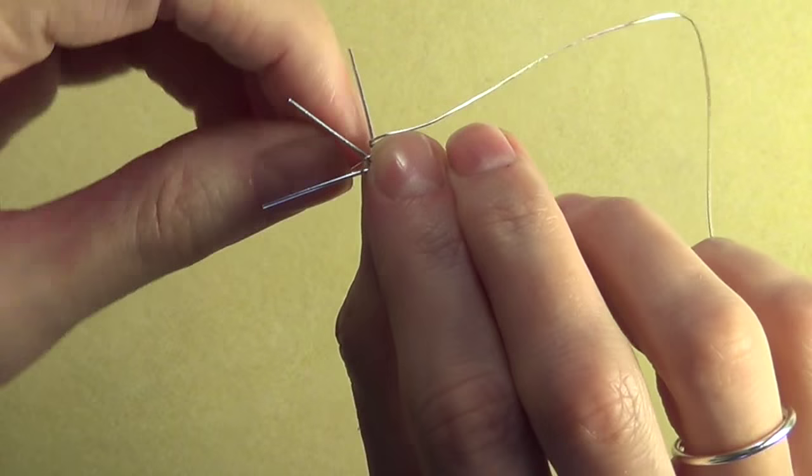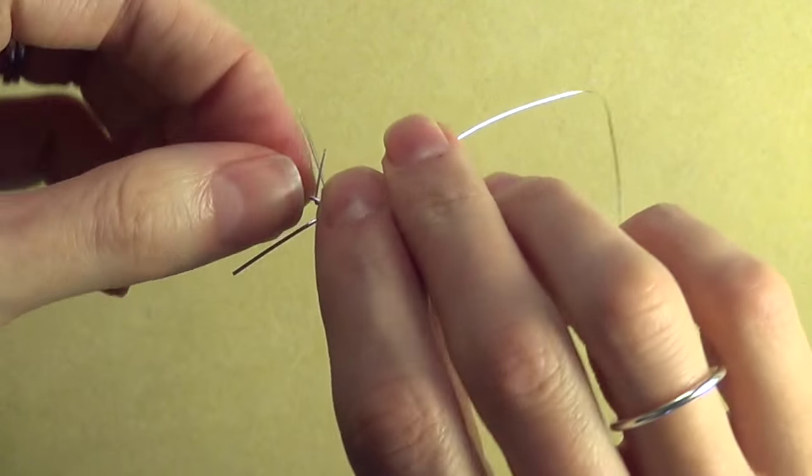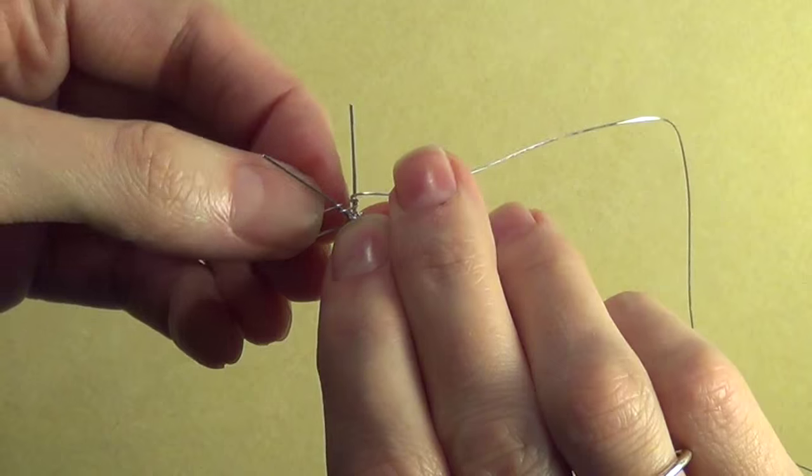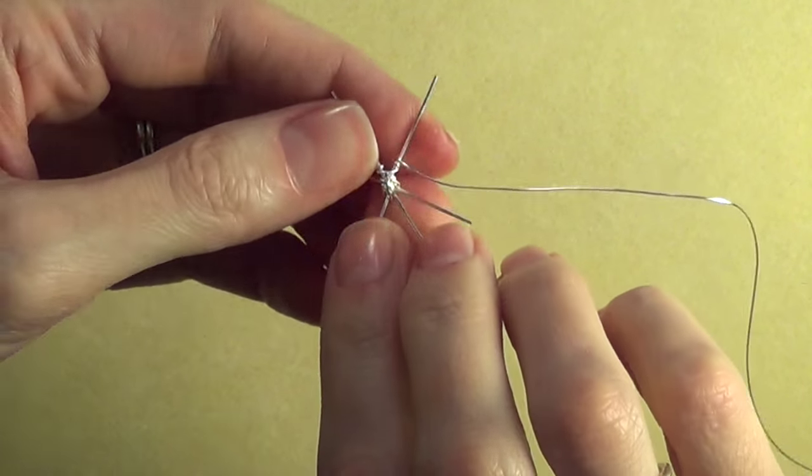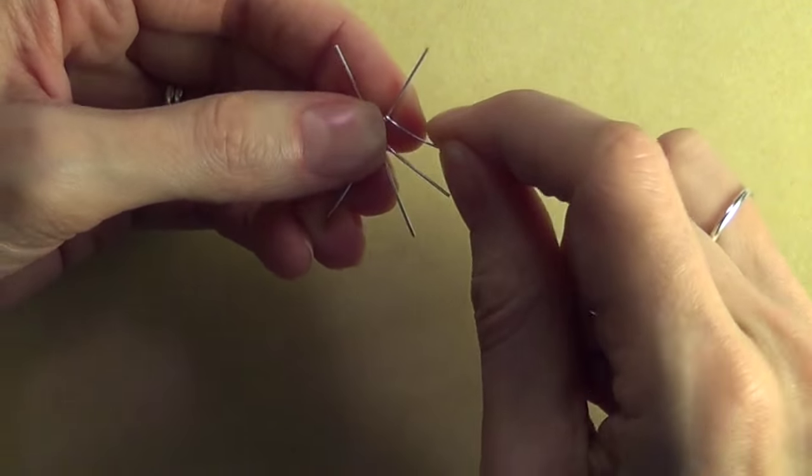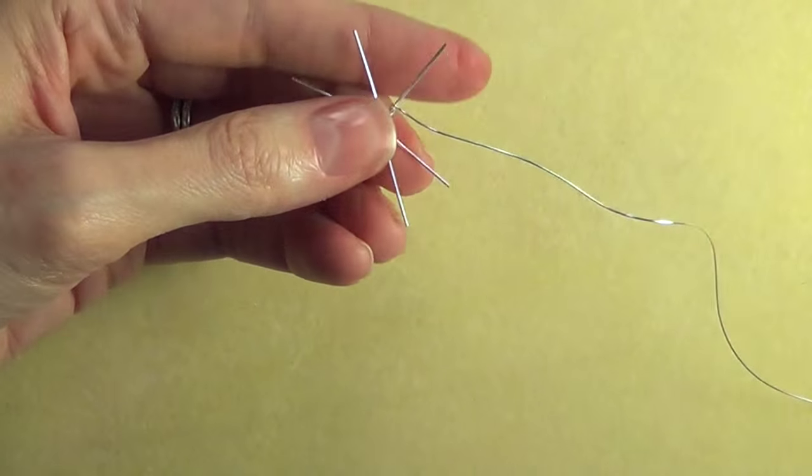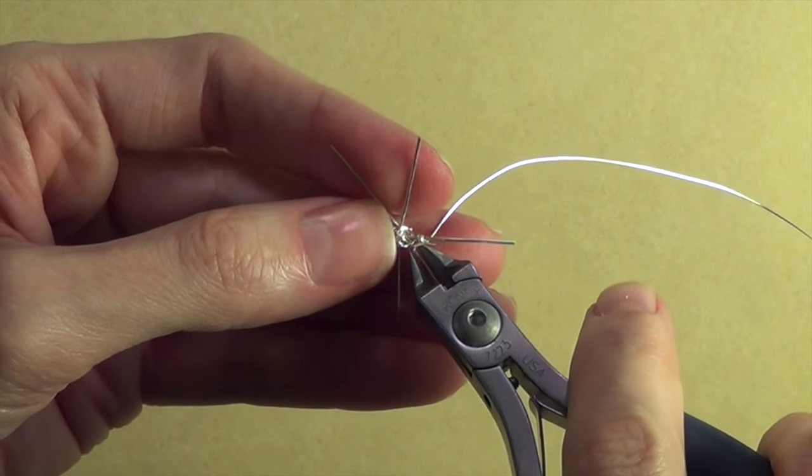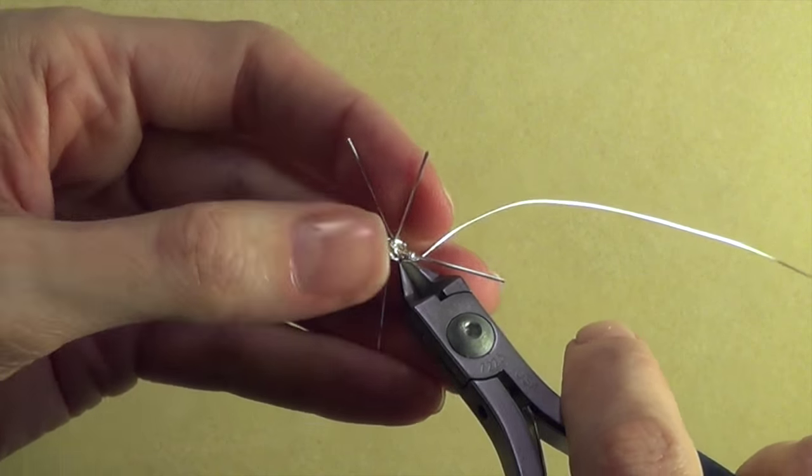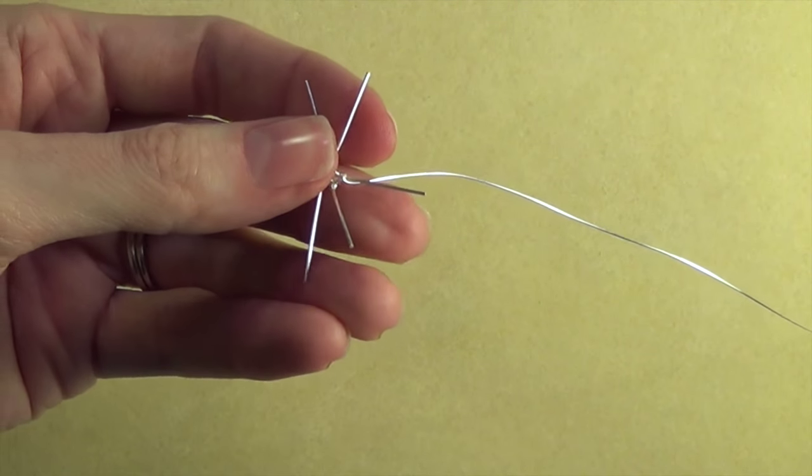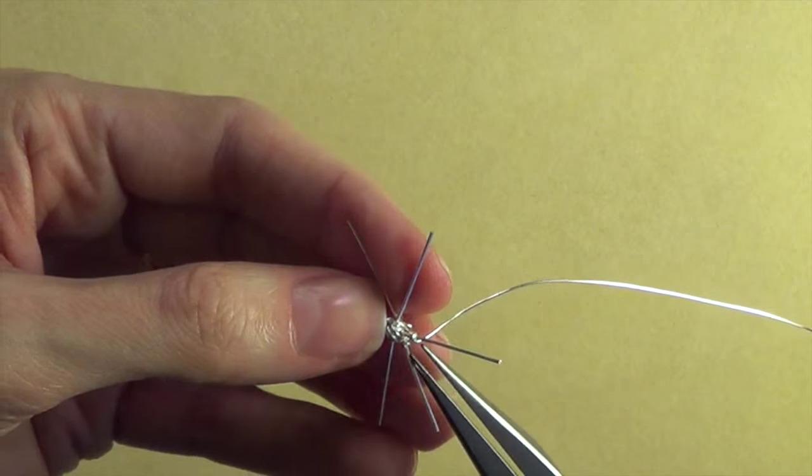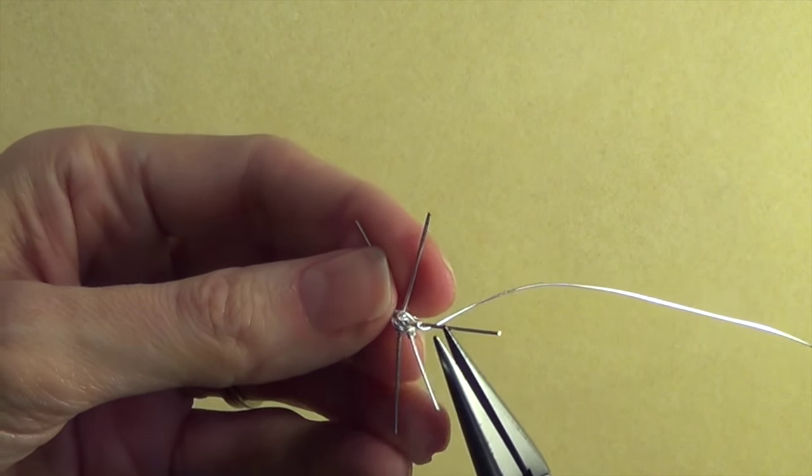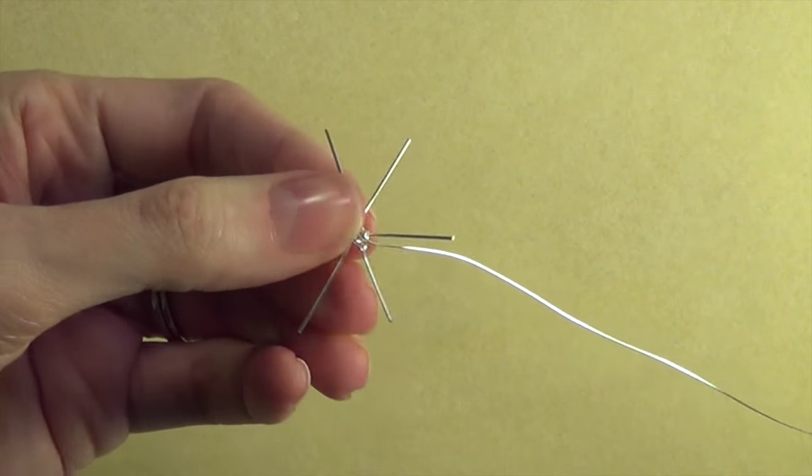Wrap it around one time and keep that as close to the center of the spoke as possible. Okay so that's a little bit better so I can trim off the short tail now.